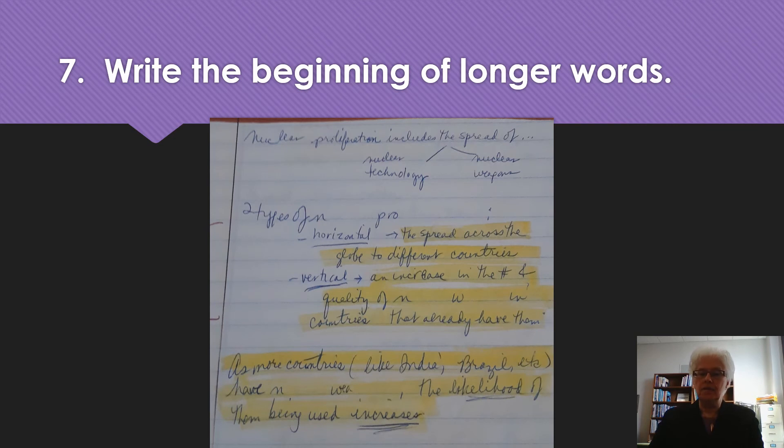Number seven: write the beginnings of longer words and then leave a little blank space. This enables you to keep up with the professor and get the entire point, not just the beginning of a point. This is a set of notes I took in a lecture about nuclear proliferation, and you'll see that I wrote that at the top of the page. Then the professor said, I'm going to tell you about two types of nuclear proliferation, and the first is horizontal.